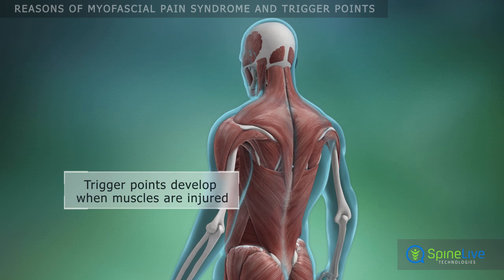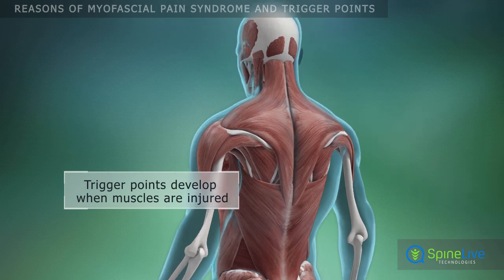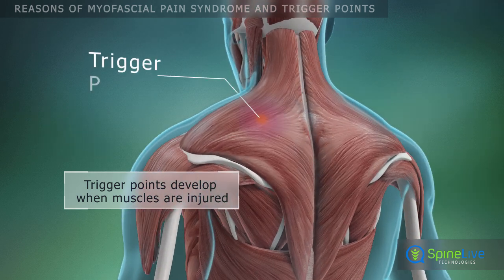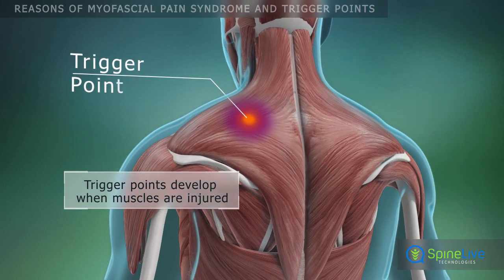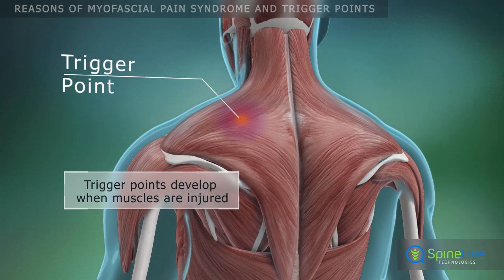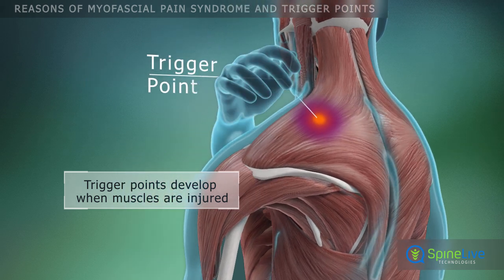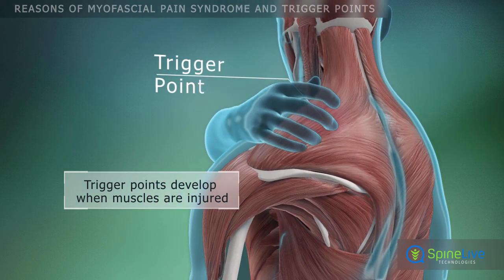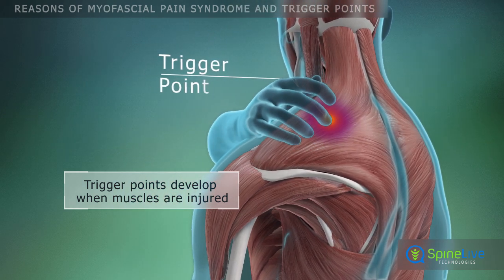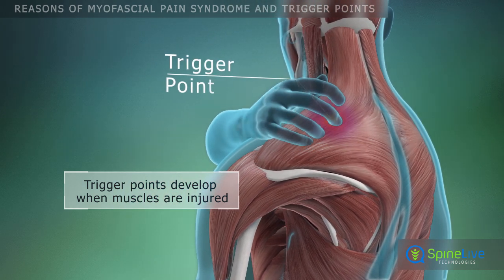Trigger points are caused by muscle injury. Muscles can be injured suddenly in accidents, or damage can occur slowly due to repeated movements or poor posture.